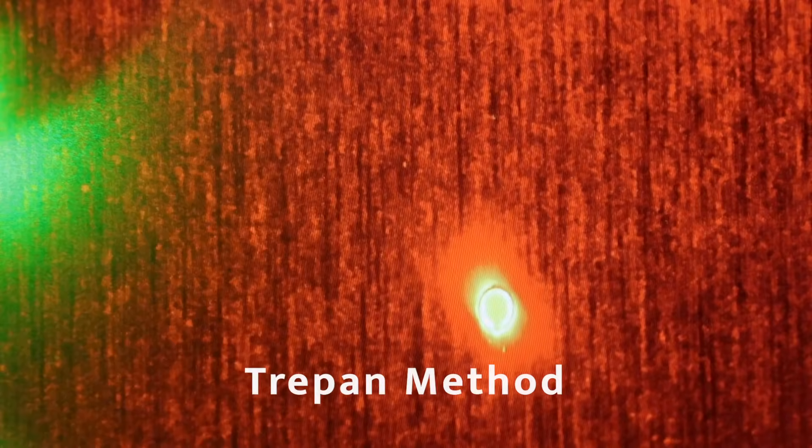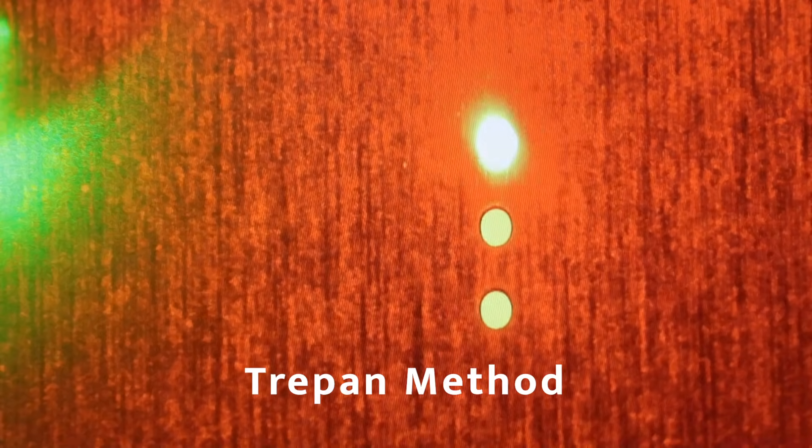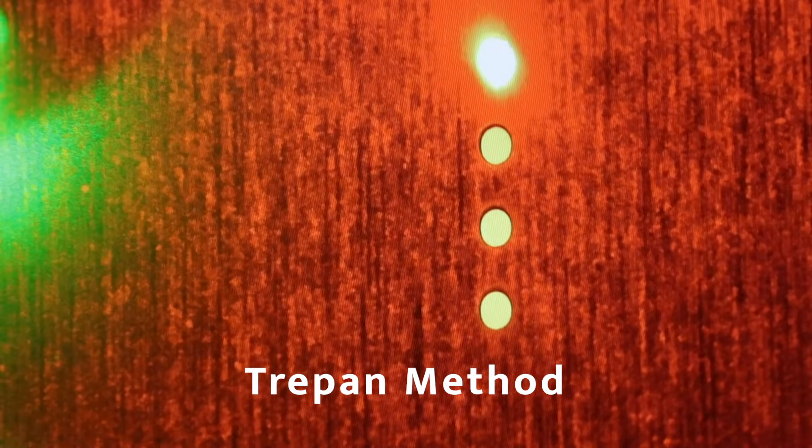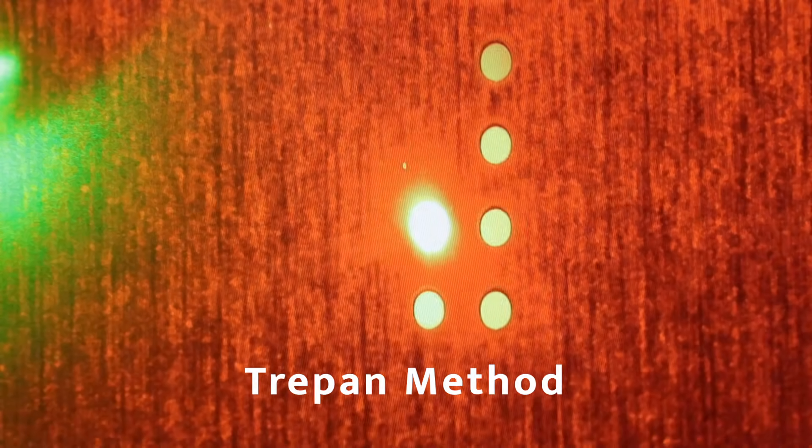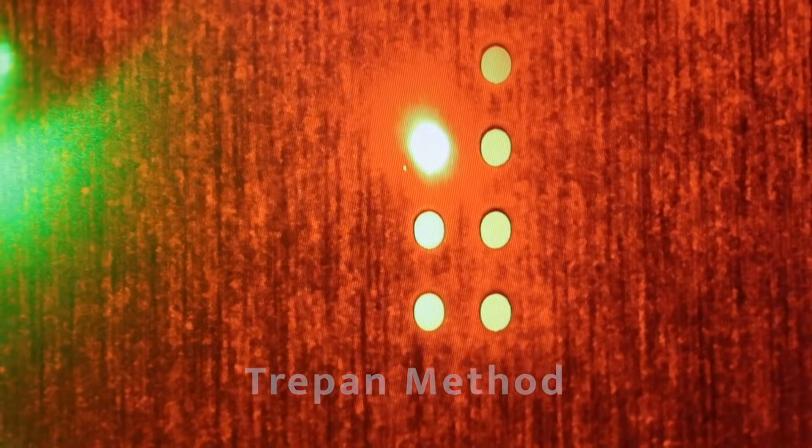Holes as small as five microns and round holes of 15 microns can be obtained by using the trepan method. The laser or part is rotated in a series of tight circles until a perfectly round hole is achieved.